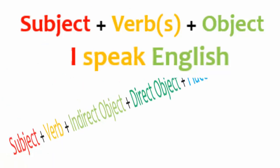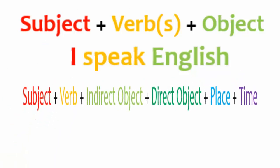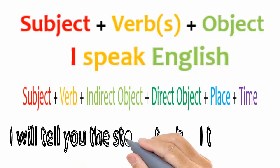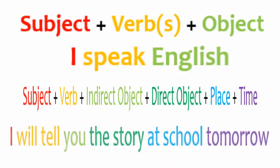If you wanted to use indirect and direct objects with place and time, the structure would become subject, verb, indirect object, direct object, place and then time. For example: I will tell you the story at school tomorrow.